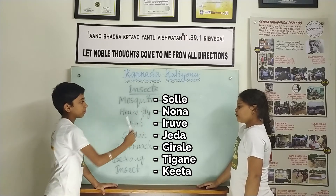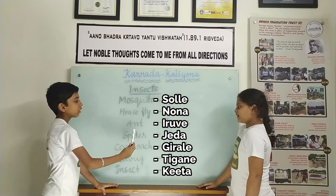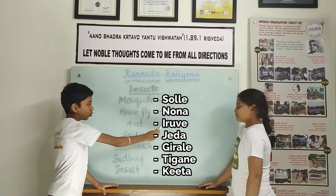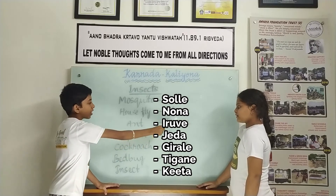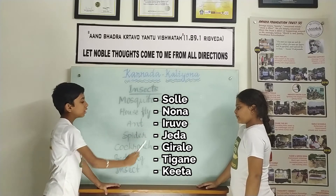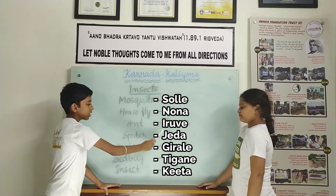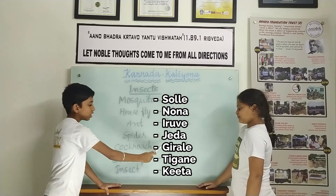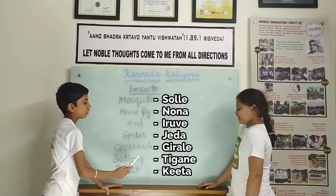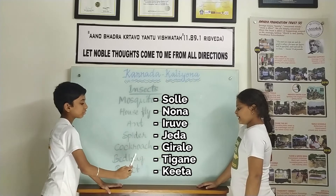Okay friends, now let's pronounce these words. Solleh. Nona. Iruve. Jada. Jirale.